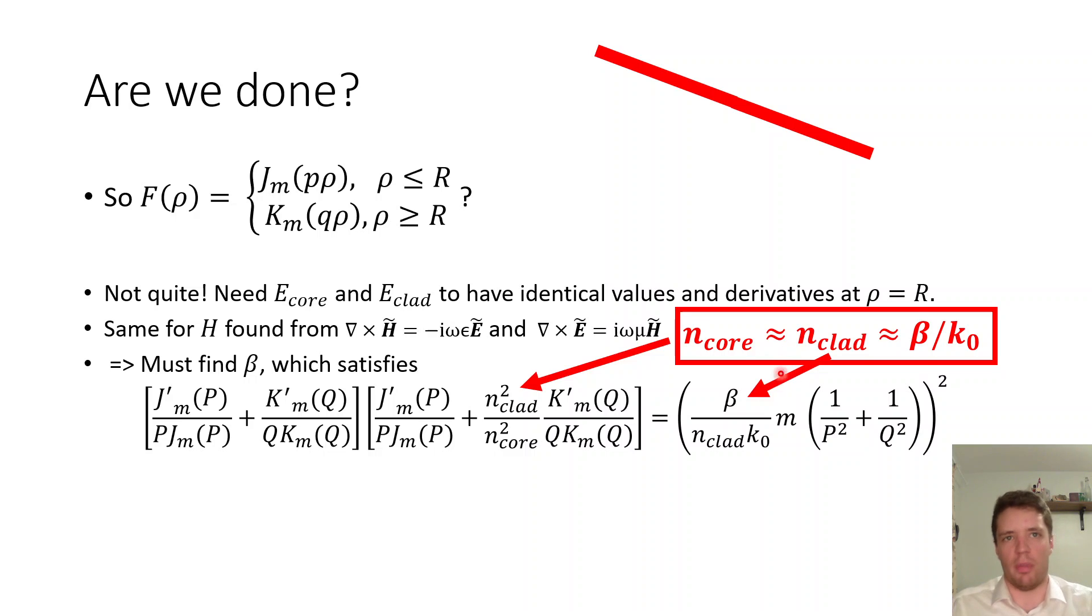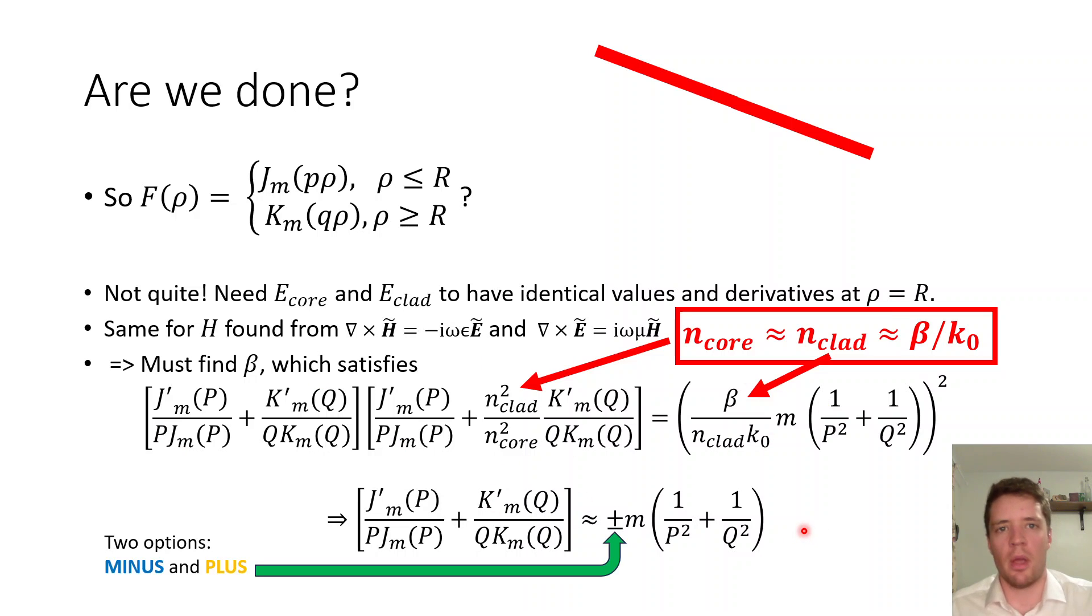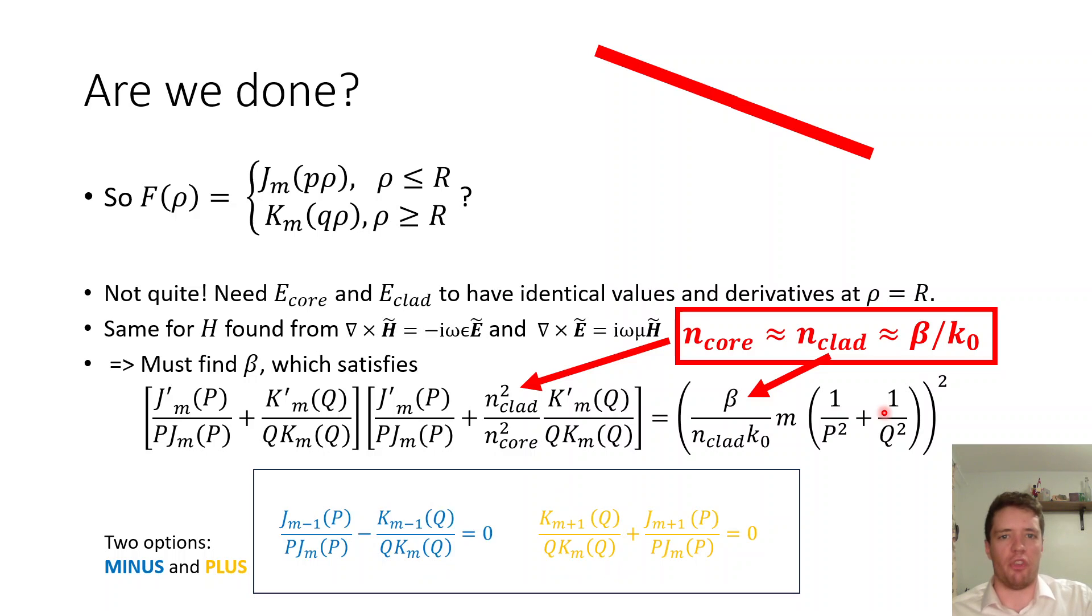So again going through a lot of mathematical details here you can see this equation right here and remember that there's a beta hiding inside every single instance of p and q in this formula so that looks pretty complicated but luckily we can use an approximation namely that the index in the core and the cladding is almost the same, it's slightly bigger but it's only about like maybe 0.1 percent or something and that also means that n_core ≈ n_clad and β/(k₀*n_clad) will approximately equal one. So with that in mind we can reduce this whole expression to the following. Now note that actually gives us two options for equations that can provide us with modes depending on whether we choose a plus or minus when we take the square root.